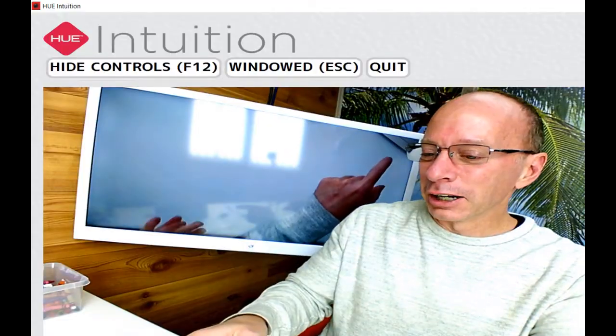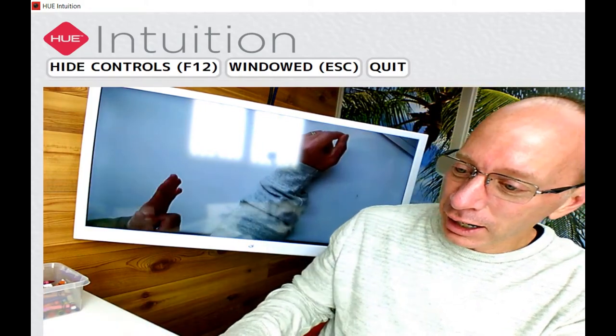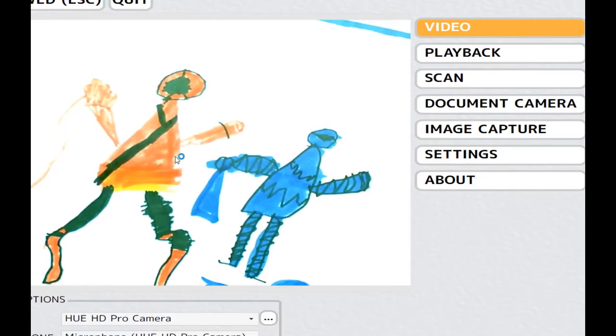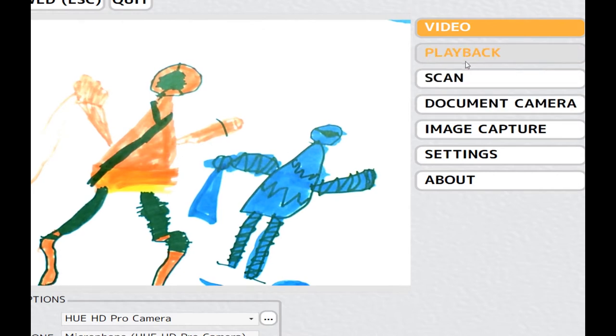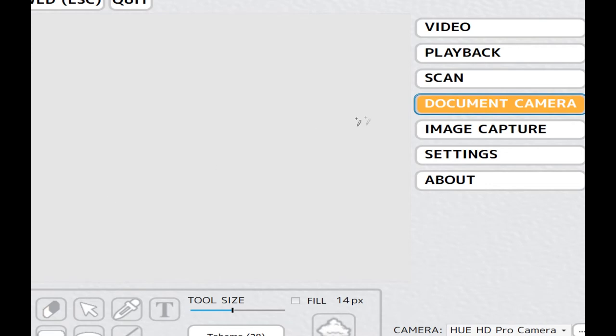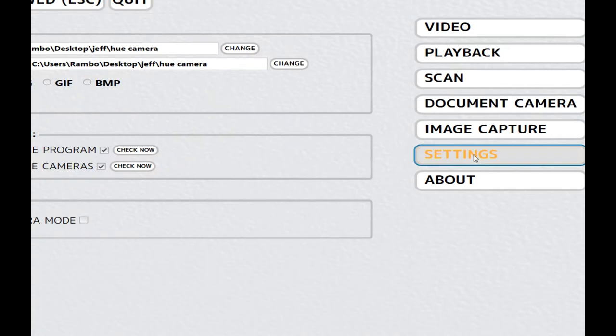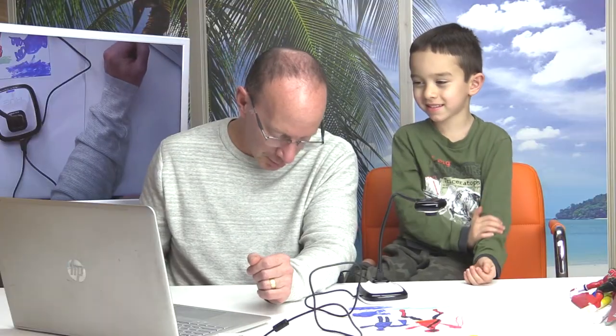Anyway, I have it on my computer right now. So you can see this on the computer. I have the program that comes with it. It's called Hue Intuition. So you can see this camera is pretty cool. It offers different things in here. You can take video, you can go to the document camera, you can take a picture of your document, you can scan things. You got your settings, saves as a JPEG, PNG, GIF, BMP. So this offers a lot of cool things.